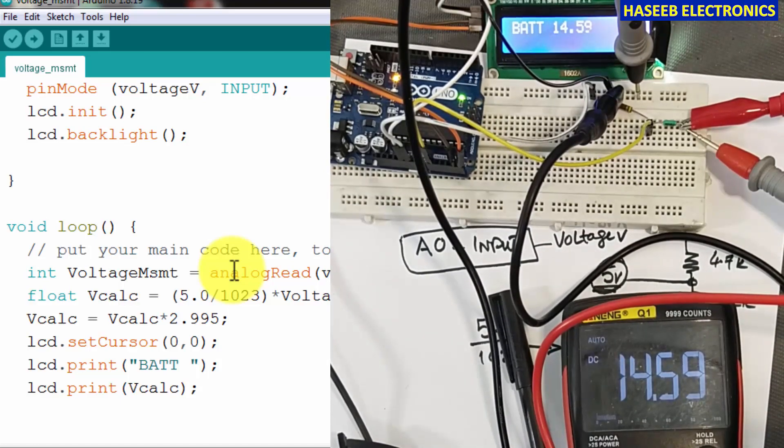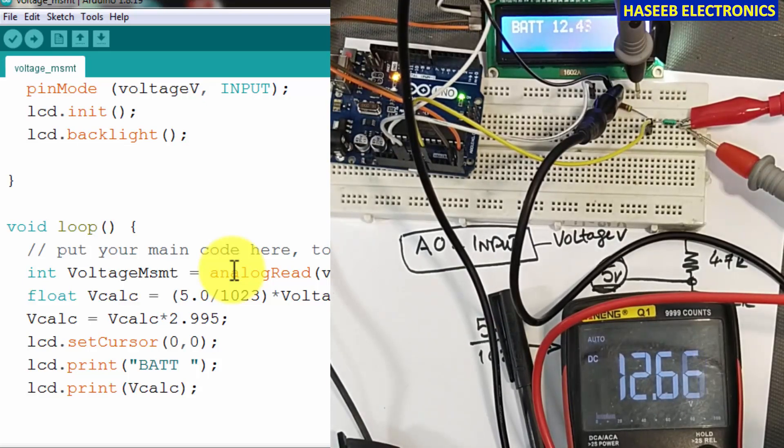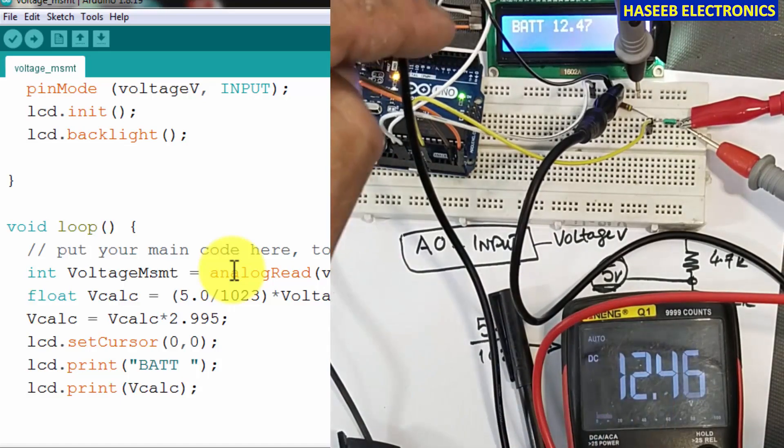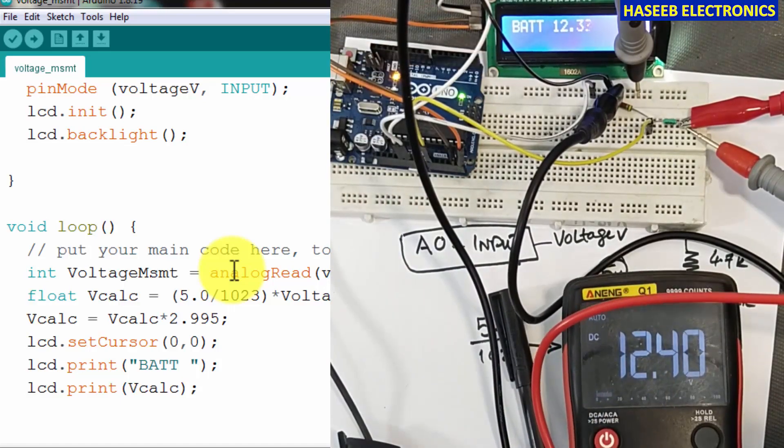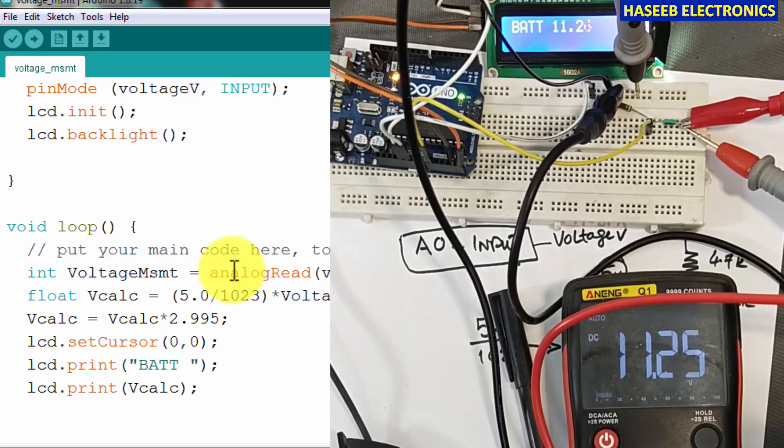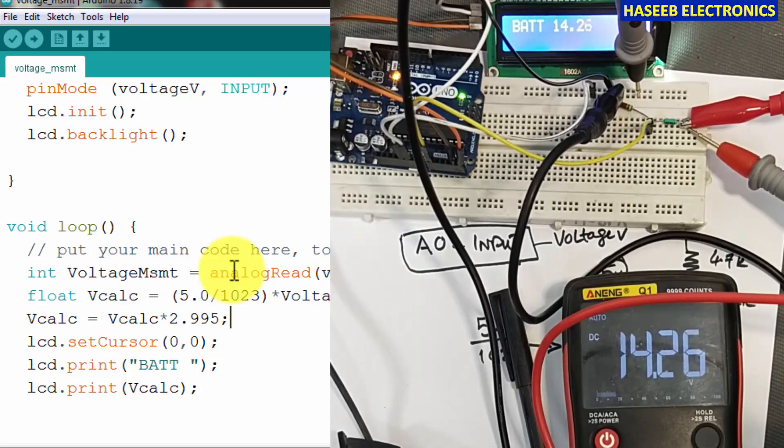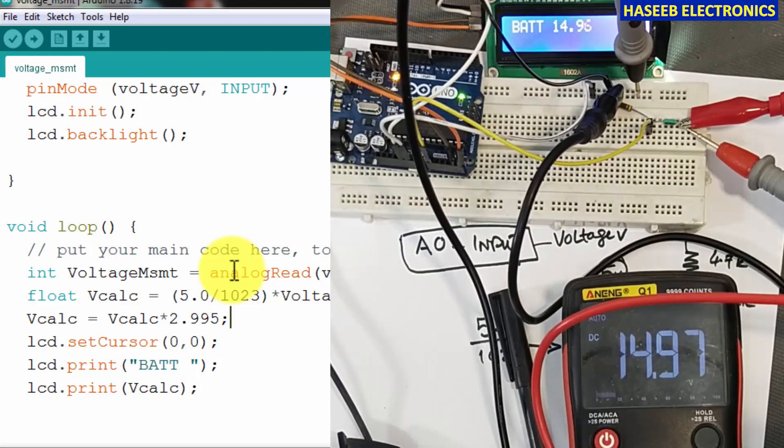Now if I decrease the voltage from the power supply, it is 12.66, 12.47, so both are calibrated now. 11.31, that is the same because it is a digital conversion. 11.35, that is similar. 12.7, 14.25, it is changing. 14.96.